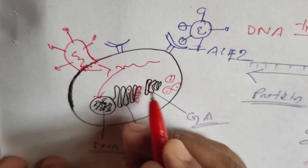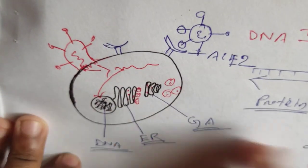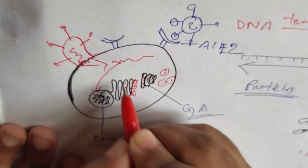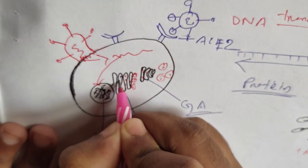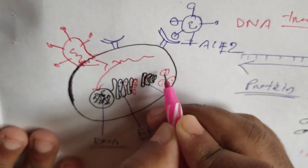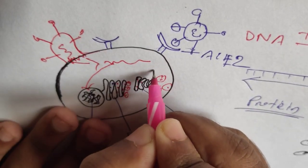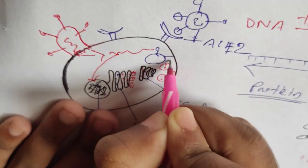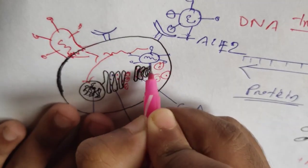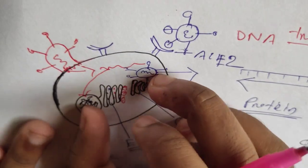Then, with the help of ribosomes, it makes proteins — all the essential proteins like S protein, M protein, and E protein that the virus needs. These proteins are transferred into the endoplasmic reticulum, then into the Golgi apparatus, and out into the cytosol, where the viral proteins assemble and the RNA is packaged inside. Then the new virus particles transfer out of the cell.